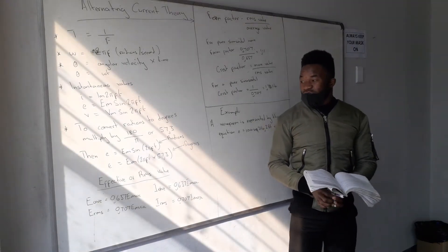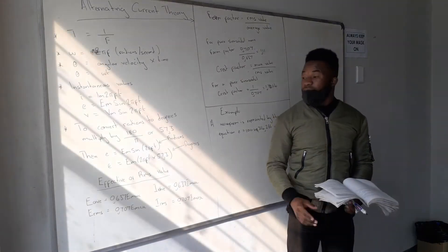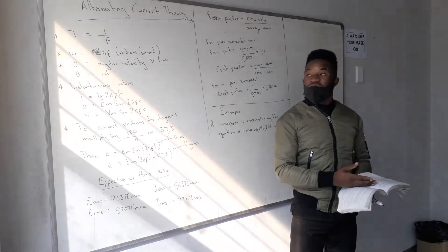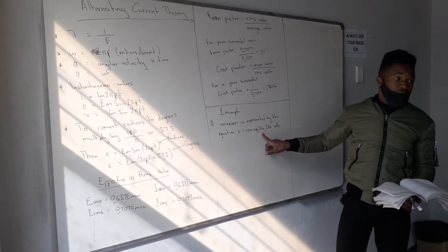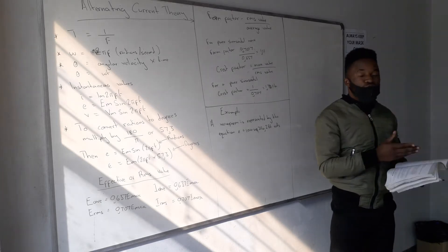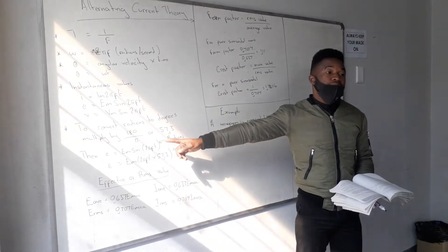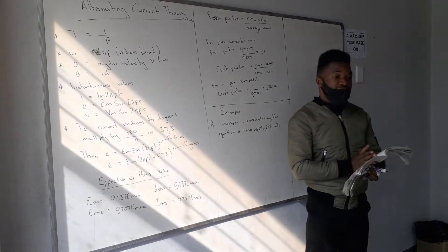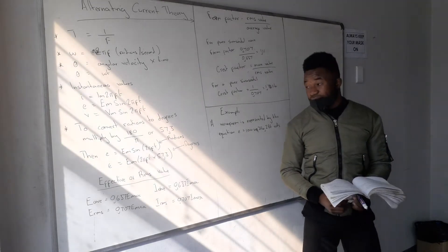Whenever you're calculating instantaneous values, you have to convert to degrees. You must know how to convert from radians to degrees by multiplying by 180 divided by π, which equals 57.3. So whenever you're given the angular velocity and calculating the instantaneous value, you always need to multiply by 57.3, otherwise your answer will be wrong.